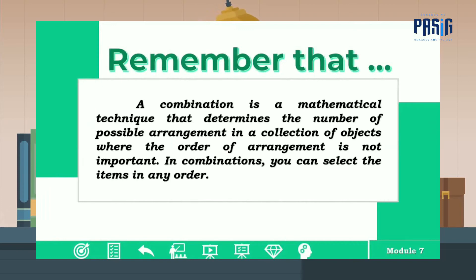Combination is a mathematical technique that determines the number of possible arrangements in a collection of objects where the order of arrangement is not important. In combination, you can select the items in any order.